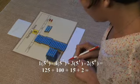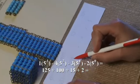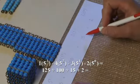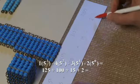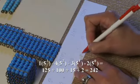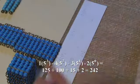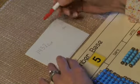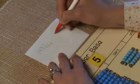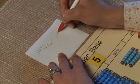We have 125 plus 100, or 225 plus 15, which is 240, plus 2 equals 242. We can now show that base 5, 1432, is equal to base 10, 242.